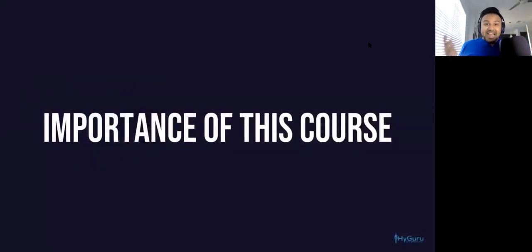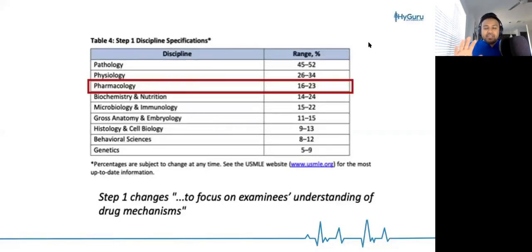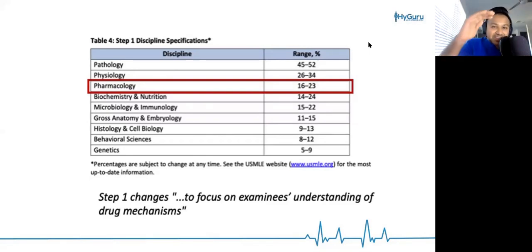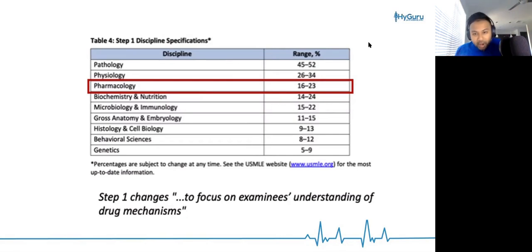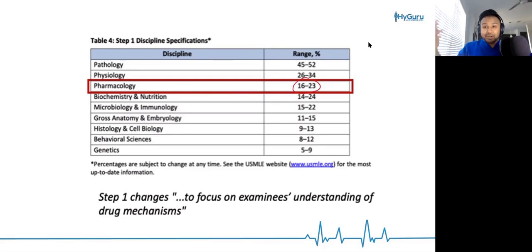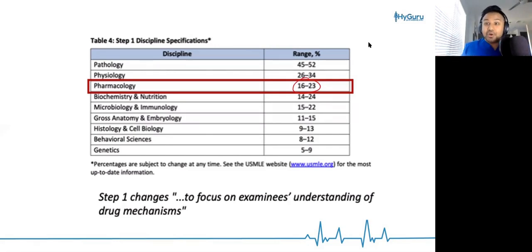I wanted to highlight the reason why this course is so important and especially why I made this course. This is the USMLE content outline, and when we're talking about the USMLE content outline, the content outline has specifications as to what different disciplines are on the actual exam. As you can see, pharmacology accounts for about 16 to 23% of your USMLE exam. And as you all know, in November and December 2020, the USMLE bulletin stated that we're going to have a lot more ethics and physician communication exam questions.